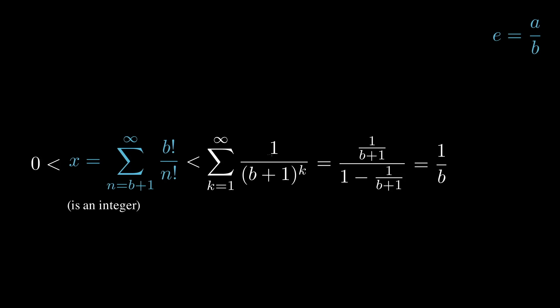Recalling that in our original assumption b was a positive integer, 1 over b has to be strictly less than 1. In other words, our quantity x, which is an integer, is greater than 0 and less than 1. There is no integer greater than 0 and less than 1. This is the contradiction we've been looking for.